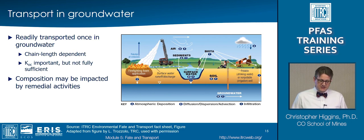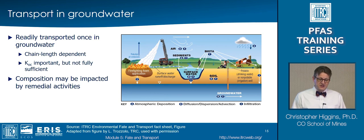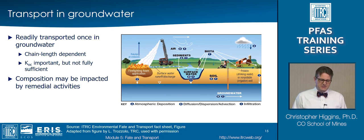Once these compounds get into groundwater, they're relatively readily transported. However, they are not all transported the same — transport is very much chain-length dependent, again linking back to retardation factors that generally increase with increasing chain length. Understanding organic carbon and the partitioning of compounds into organic carbon is important, but not fully sufficient to describe their behavior. The composition of these compounds in groundwater can also be impacted by any remedial activities that have taken place at a particular site.